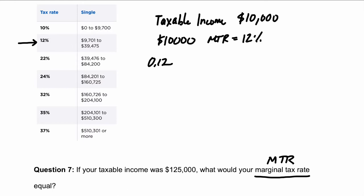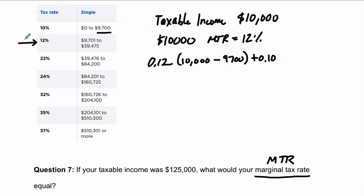So, just that $300. As an equation, it would look like this: $10,000 — your taxable income — minus $9,700, the amount in the bracket before it, that's $300. And then you pay another tax rate, 10%, on all the money that fills up the previous margin. So you pay 10% on $9,700 and 12% on $300 — and this would be your total federal taxes.